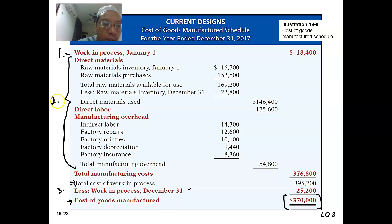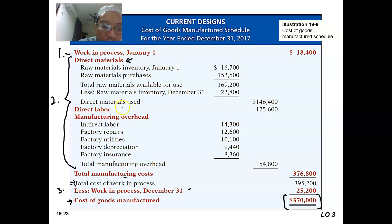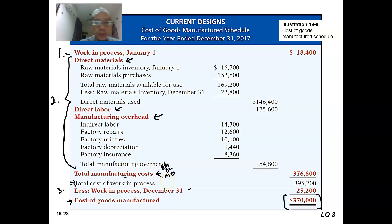When we look a little further, the total manufacturing cost consists of three things. First is direct material, second is direct labor, and third is manufacturing overhead. The manufacturing cost is divided into these three: direct materials, direct labor, and manufacturing overhead.